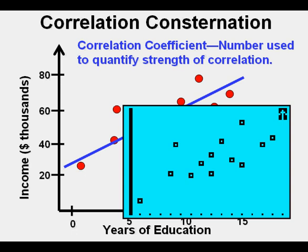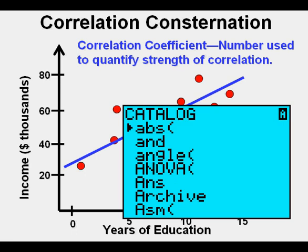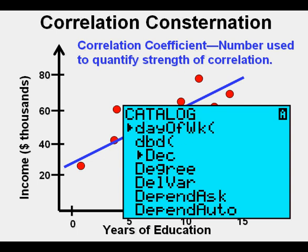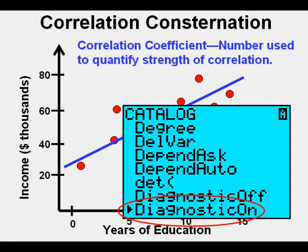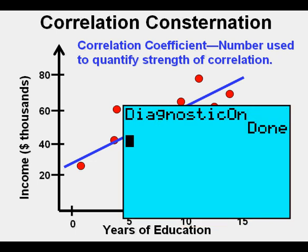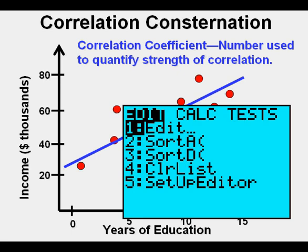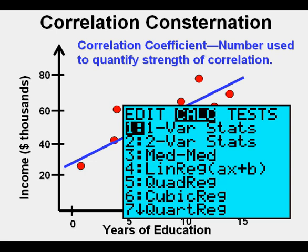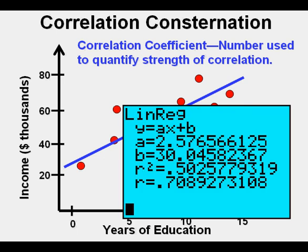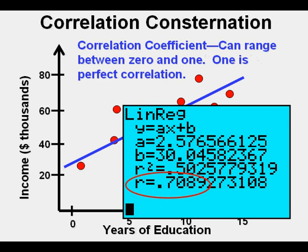To calculate the R value, activate the calculator's diagnostic tool. Press SECOND, then the zero key to get the catalog view. Press the X to the negative 1 key — which has the green D above it in alpha mode — to jump to D, then scroll down to Diagnostic On and press ENTER twice until it says DONE. Now find the line of best fit by pressing STAT, arrow once right to CALC, scroll down to 4 Linear Regression, and press ENTER twice. This gives the equation for the line of best fit: Y equals about 2.58X plus 30, and the R value or correlation coefficient is about 0.7.